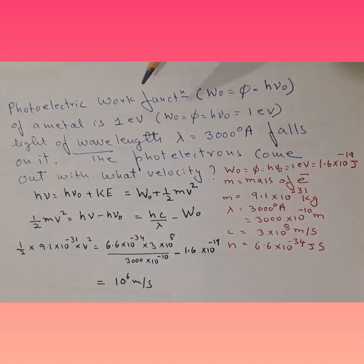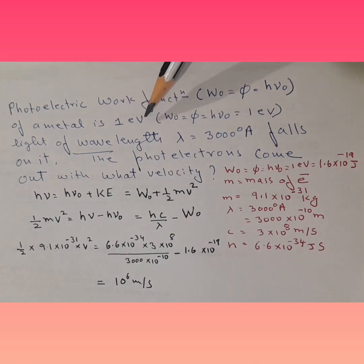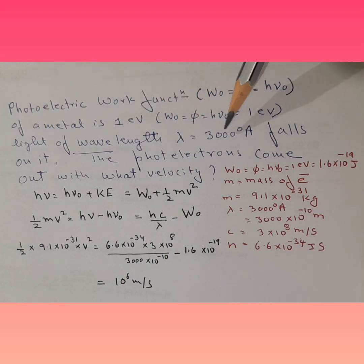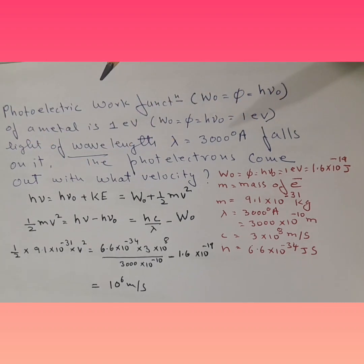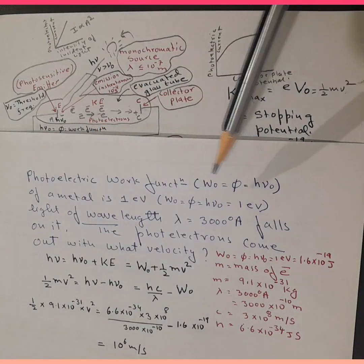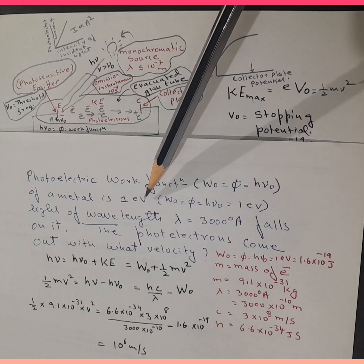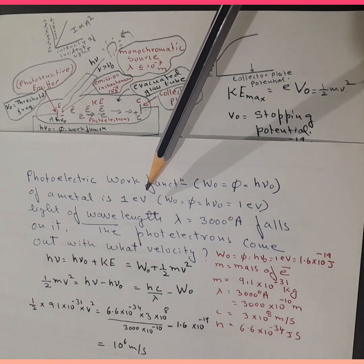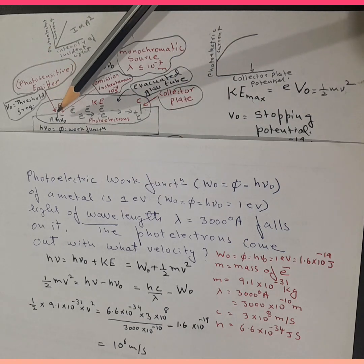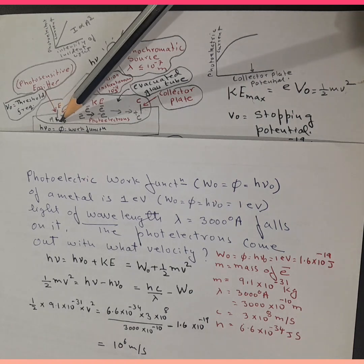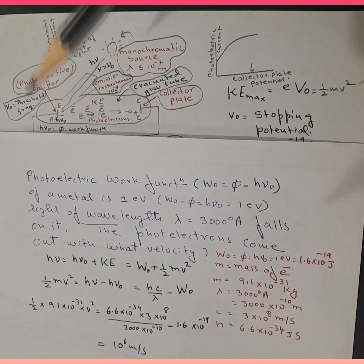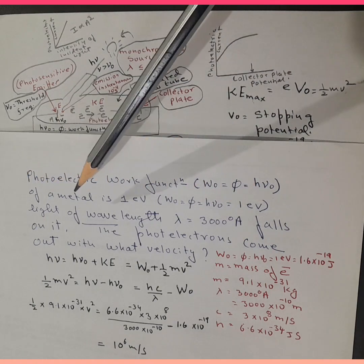Let's understand another problem. The photoelectric work function of a metal is 1 eV. Light of wavelength lambda equals 3000 angstrom falls on it. The photoelectrons come out with what velocity? The work function of 1 eV means that is the threshold energy required for an electron to be emitted.